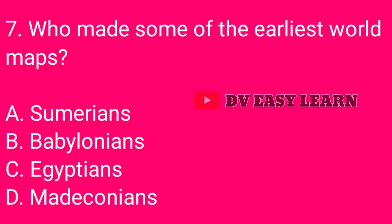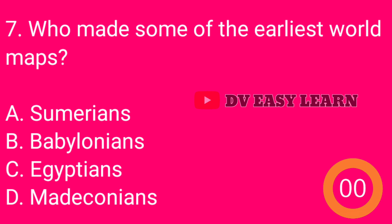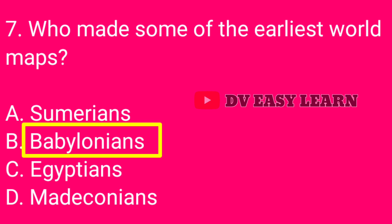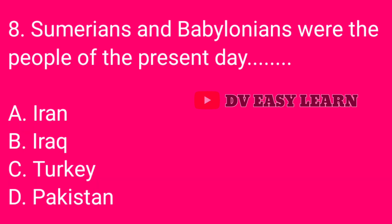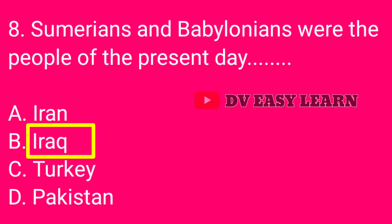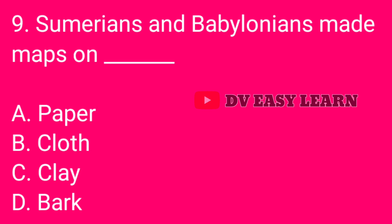Question number 7: Who made some of the earliest world maps? Correct answer: Babylonians. Question number 8: Sumerians and Babylonians were the people of the present day — correct answer: Iraq. Question number 9: Sumerians and Babylonians made maps on — correct answer: Clay.